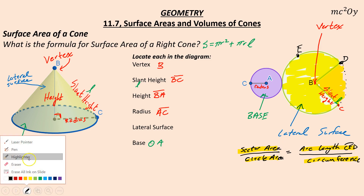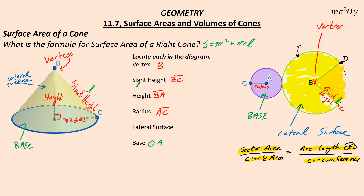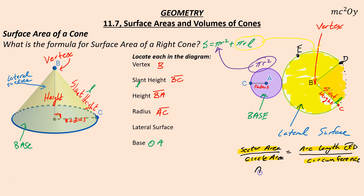So sector area over circle area equals arc length of C-D over the circumference. The area of that sector is what we're looking for because we know, to find the surface area of this, we know this shape right here — this circle — is equal to πr². That πr² is just that πr². So that would mean that this piece right here, this πrL, has to be the area of the sector. So the area of that sector has to be represented as πrL.